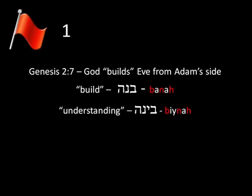Well, in Genesis 2:7, for example, the Hebrew word used for God's creation of Eve from Adam's side is banah. Notice that the consonants are B, N, and H — banah, to build. So, in a sense, God builds Eve from Adam's side.